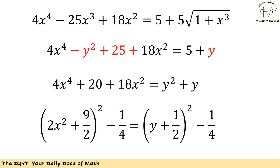Let's replace negative 25x cubed with y² minus 25. If we do this, on the left hand side I have two variables x and y, which is not ideal. On the right hand side I only have y. So let's move everything with x to the left hand side and everything with y to the right hand side. Doing this gives: 4x⁴ + 20 + 18x² equals y² + y.